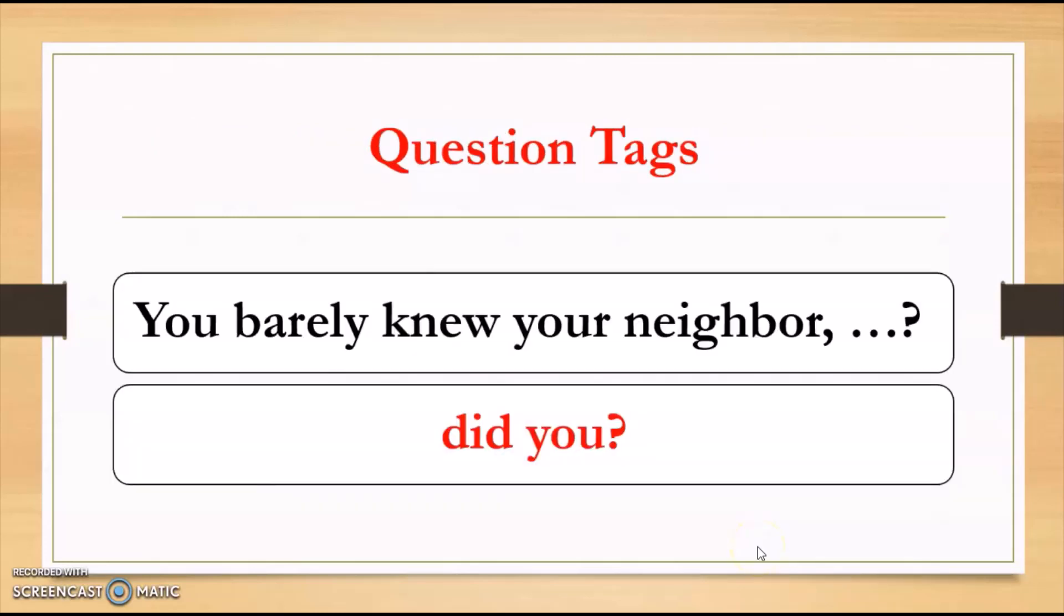The next question is on question tags. You must remember one rule for question tags. If the sentence is positive, you put the negative question tag. And if your sentence is negative, then you put a positive question tag. For example, here you barely knew your neighbor. Barely means you hardly, which is almost negative. So this sentence is negative. You just put the positive question tag. You barely knew your neighbor, did you? It's in positive.